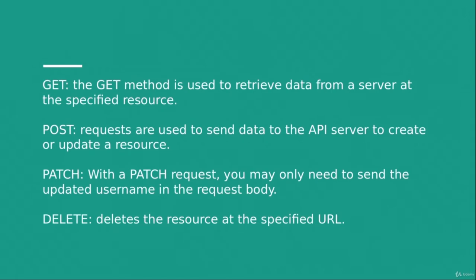A POST request is used to send data to the API or server. You can't always append details to the URL, so you send data in the request body — that is where POST comes in. Unlike GET, a POST request has a body where you can send data to the server.